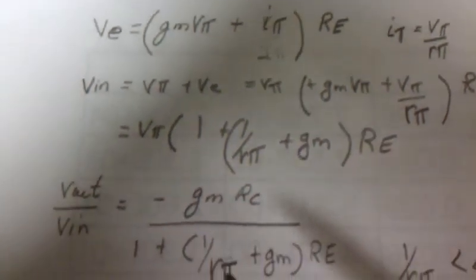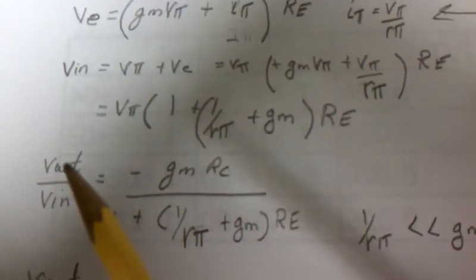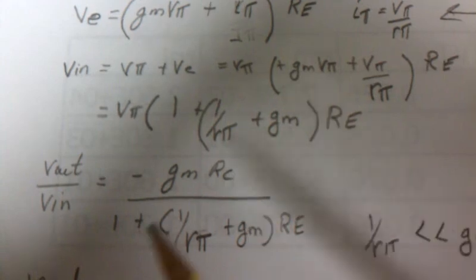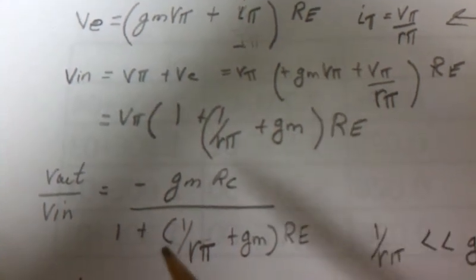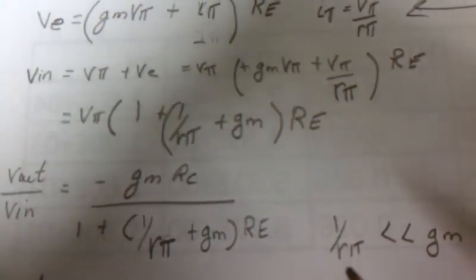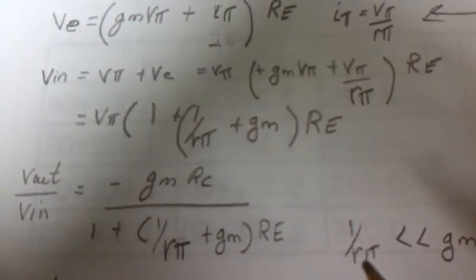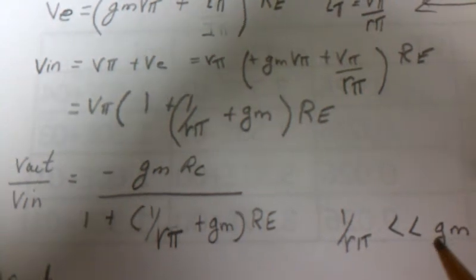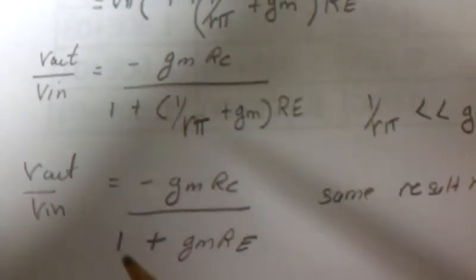When we solve V out over VIN we get minus GM RC divided by 1 plus 1 over r pi plus GM. Now usually r pi is, 1 over r pi is going to be a lot less than GM, and so this drops out and we get this equation.